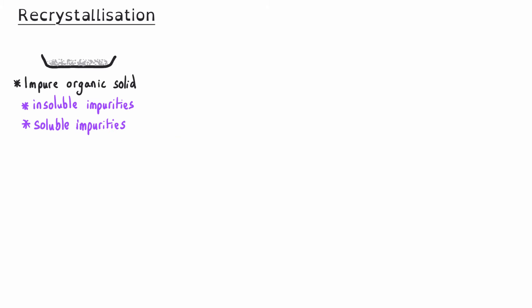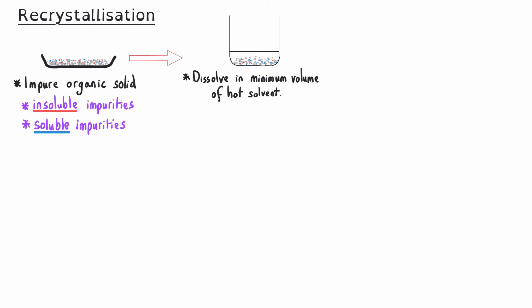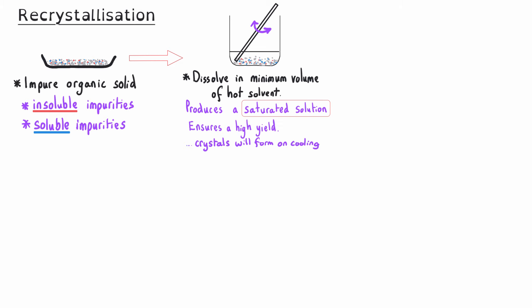The process of recrystallization is carried out with impure solids to try to increase their percentage purity. You start by taking your impure organic solid, which might contain both insoluble and soluble impurities. The first thing we need to do is dissolve our organic solid in the minimum volume possible of hot solvent. It's important to use the minimum volume because this allows us to achieve a saturated solution, giving a high yield of our desired crystals. Because we're using a hot solvent, crystals will form as the solvent cools.